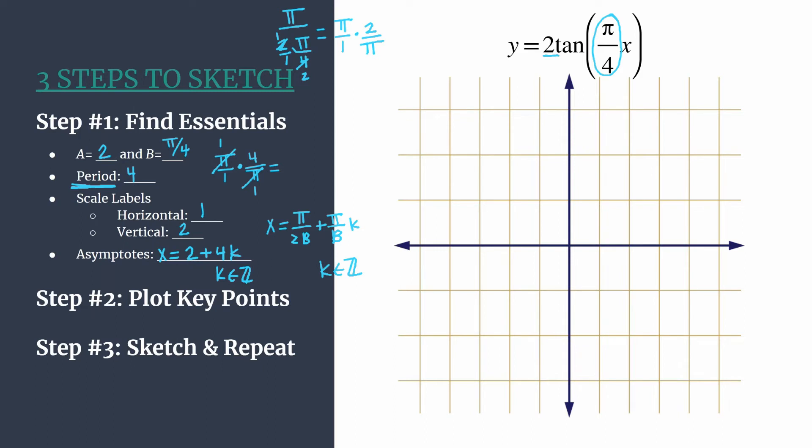So let's go ahead and label our axes according to the scale labels we found. So the horizontal first, let's count by ones, easy enough. One, two, three, four, go ahead to five if you want. And we'll label the negative side as well.